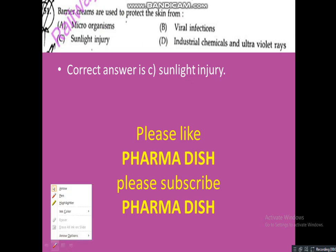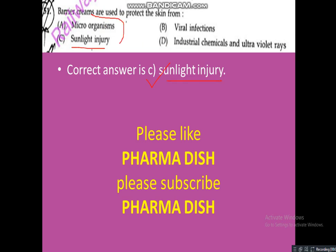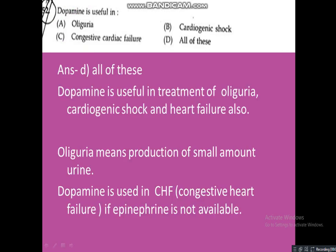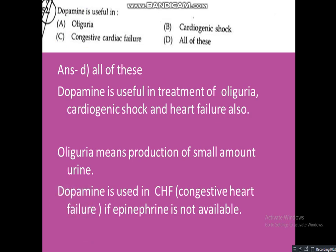Question 51: Barrier cream is used to protect skin from — Option A: microorganism, Option B: viral infection, Option C: sunlight injury, Option D: industrial chemical and ultraviolet. Correct answer is Option C — sunlight injury. Barrier cream is used to protect from sunlight injury.